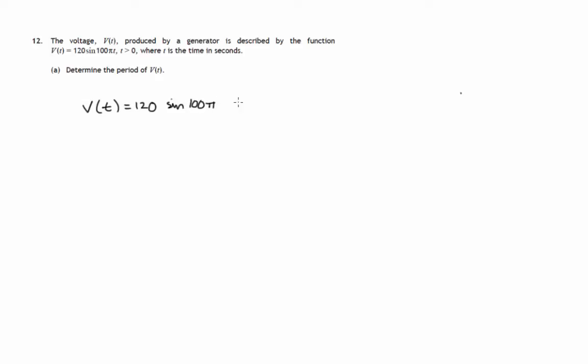So the variable is t, not theta or x, which is maybe normal. Let's look at a simpler example. Suppose we have an example y equals sine t. Then we know that in the interval from 0 to 2 pi, we get one cycle.